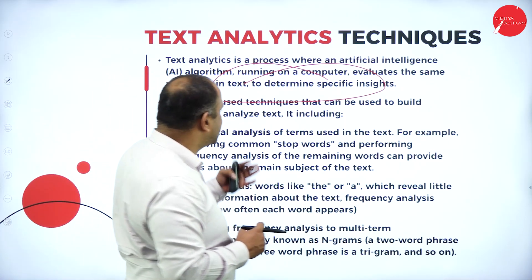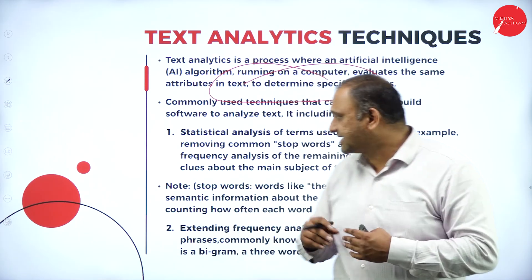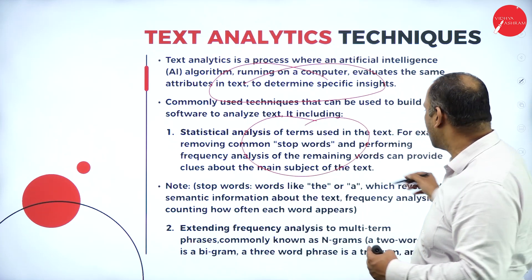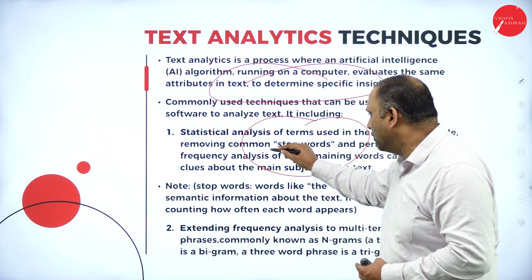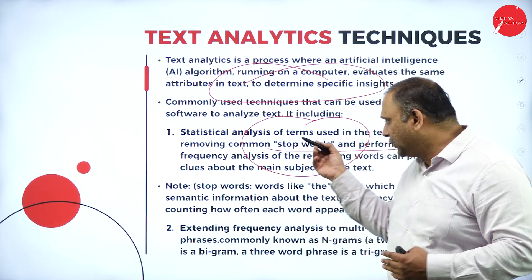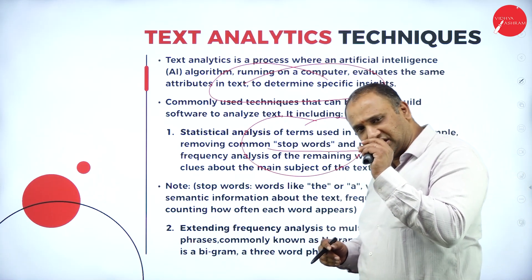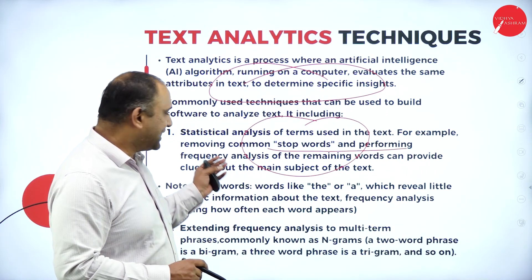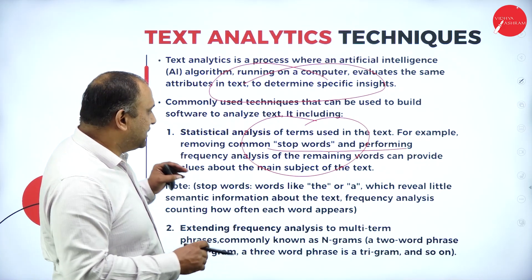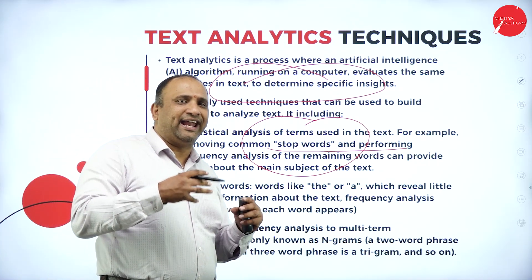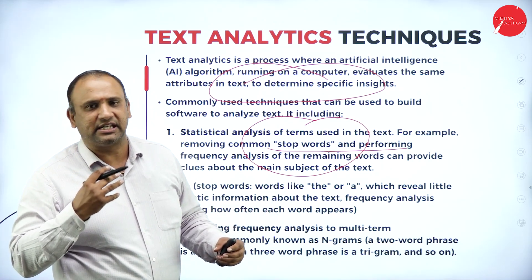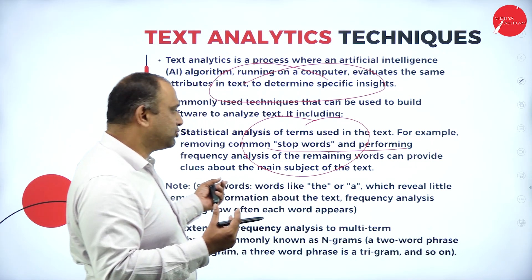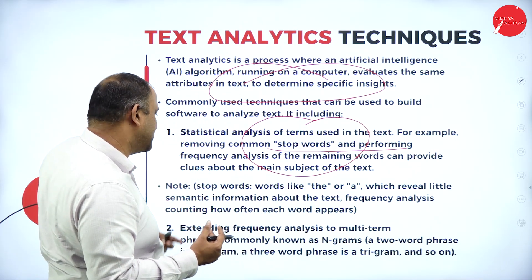The commonly used techniques to analyze text include statistical analysis of words used in the text — for example, removing common words and performing frequency analysis so that you see how often a word is spoken. You will also get clues about the main subject, such as when we talk about an animal, a place, or a vision.